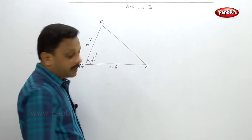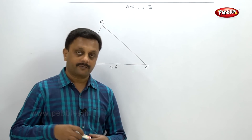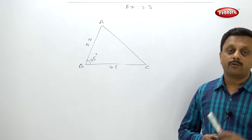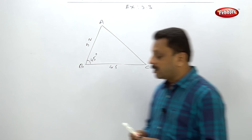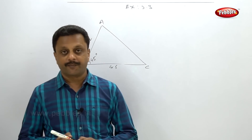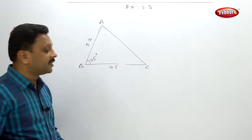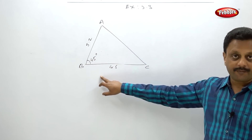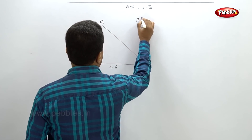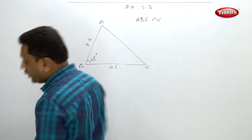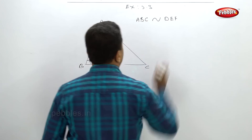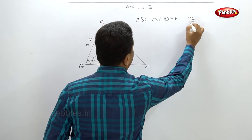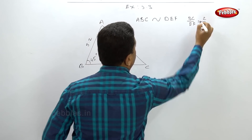ABC and DEF — no vertex is common, so you have to solve by the calculation method, the analytical method. They are given BC upon EF is 2 by 3. So calculate all three sides, or at least these two sides. ABC is similar to DEF and BC upon EF is 2 by 3.